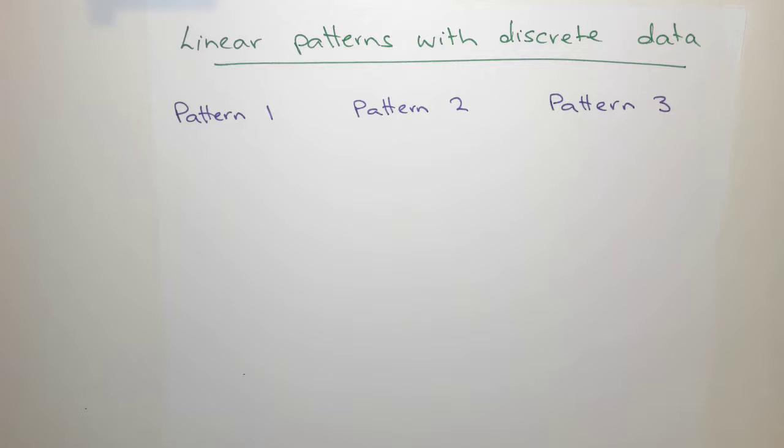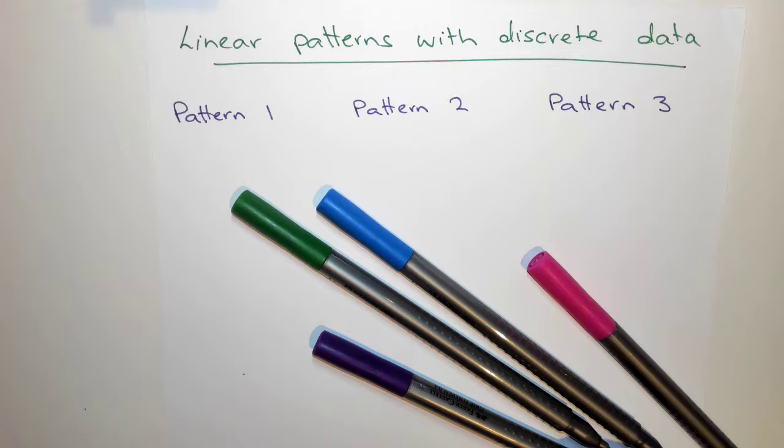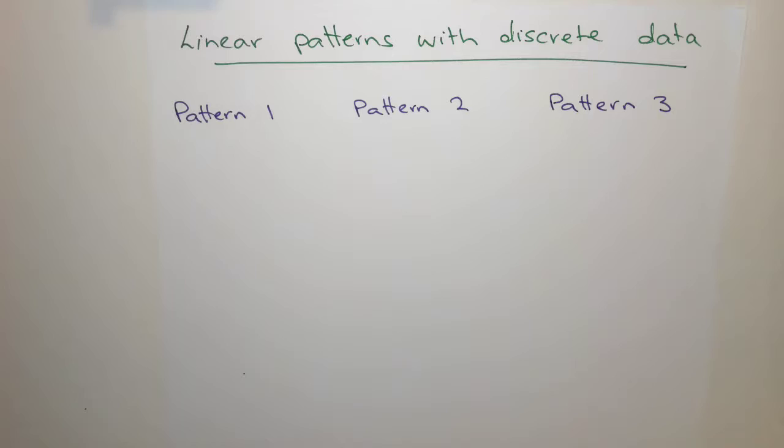We want to now have a look at linear patterns when we have discrete data. Discrete data is talking about when we've got count data. So if I'm counting a number of objects, say for example I've got my pens and I'm counting the number of pens. I can't have half a pen, I can only have a whole number of pens. So that's what we call discrete data.